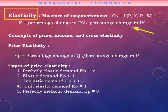Price elasticity can take five values: it can be equal to infinity, zero, greater than one, less than one, and equal to one. Given these values, the demand curve has different names. For example, if the value of price elasticity is equal to one, the demand curve is said to be unit elastic.